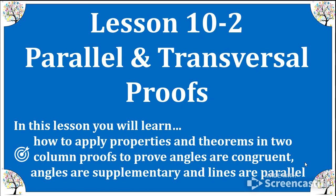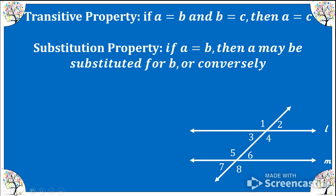Okay guys, now that we know the relationships between the angles when we have parallel lines and a transversal, we're going to take a look at proofs and prove that angles are congruent using those properties, or proving that lines are parallel. Here's a couple more properties I want you to jot down in your notebook. This is the diagram we'll be using throughout this lesson, so go ahead and create that.